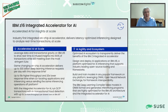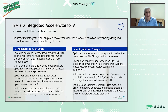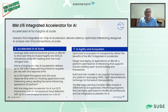Another key element of decision velocity is accelerating the building, training, and deploying of AI models into production. The strategy is to enable data scientists to build and train models on any platform — including but not limited to Z16 and Linux One — using popular frameworks like TensorFlow and PyTorch, without requiring IBM Z system skills, and then run the model on IBM Z16.